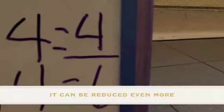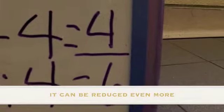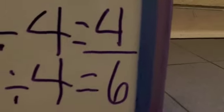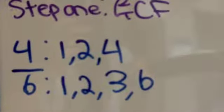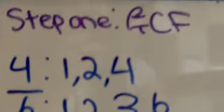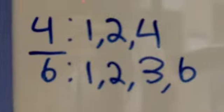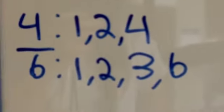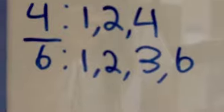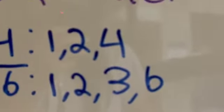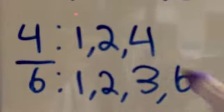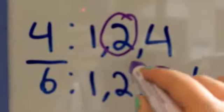But 4 and 6 can both be reduced even further, because they're both even numbers and not prime numbers. So repeat all the steps. Find the greatest common factor of 4 and 6. The factors of 4 are 1, 2, and 4. The factors of 6 are 1, 2, 3, and 6. So as you can see, the greatest common factor of both numbers is 2.